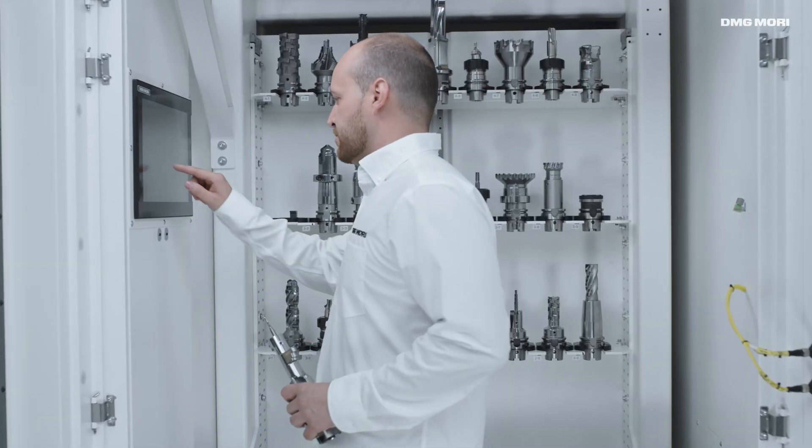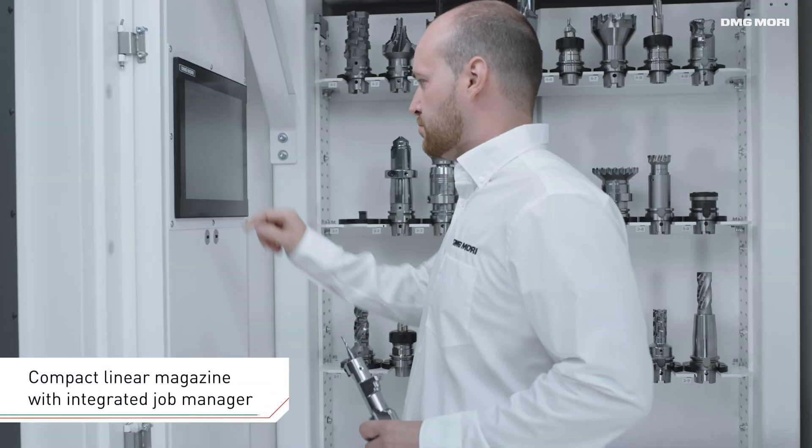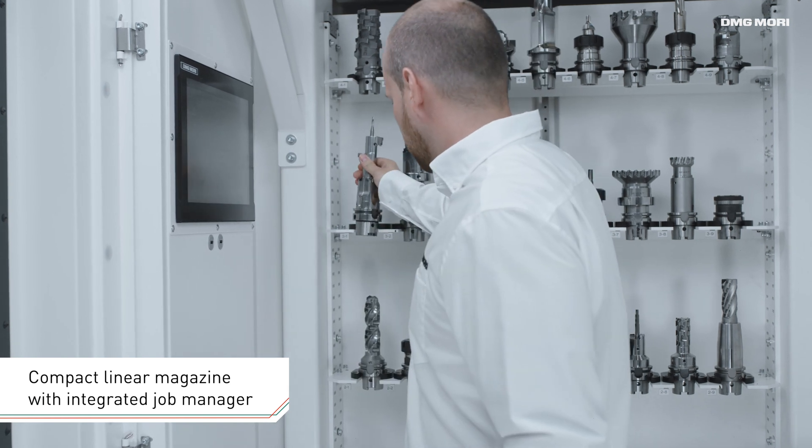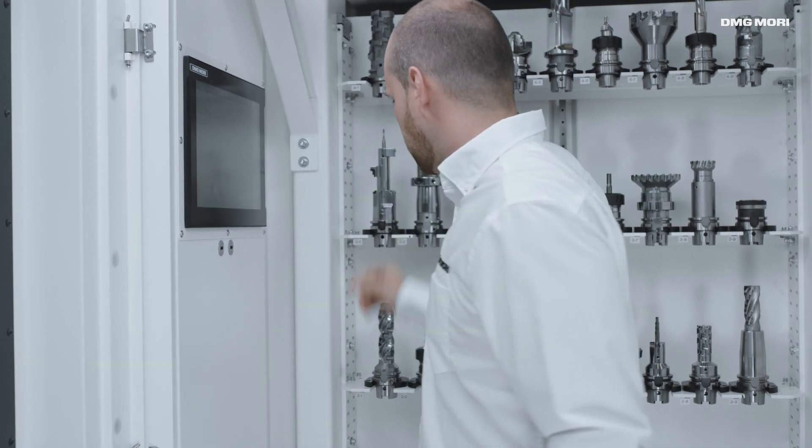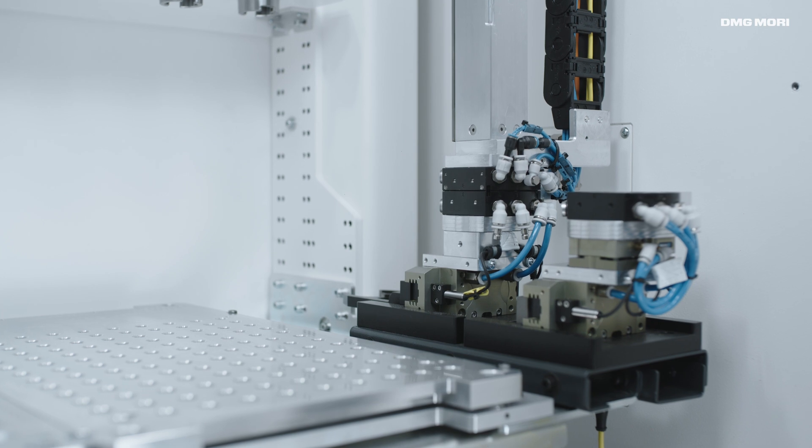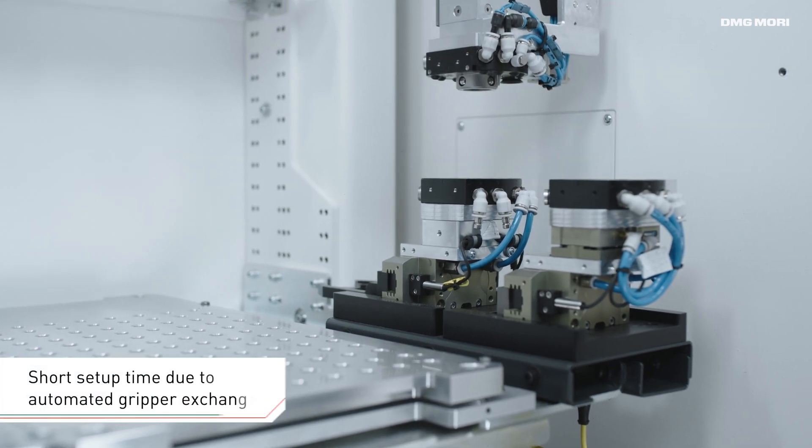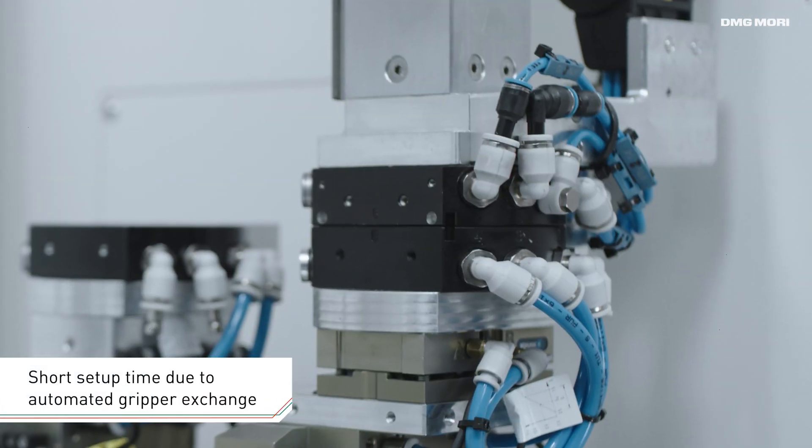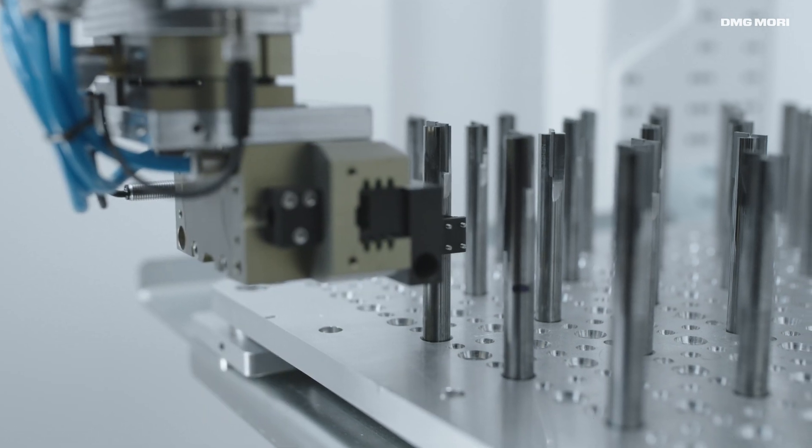The compact linear magazine stands out with its impressive accessibility and integrated job manager. The automated gripper exchange greatly reduces setup times by alternating use of HSK or shaft tools.